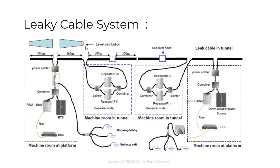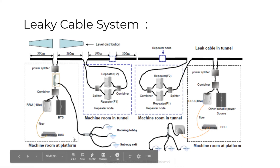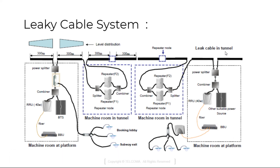We can see here leaky cables, RRUs, power splitter, cables, and repeaters. This is the machine room, platform, tunnel, tunnel and platform. You can see the leaky cable internal, repeater modes — these are the internals and booking log.